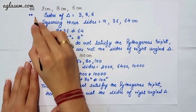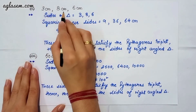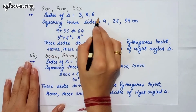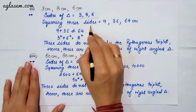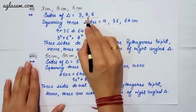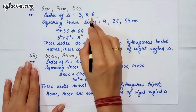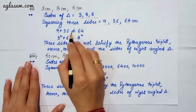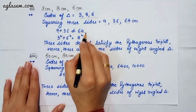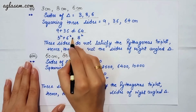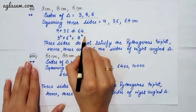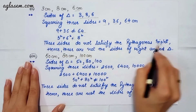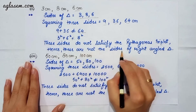Moving to our second part which says 3 cm, 8 cm and 6 cm. Again squaring the sides: 3² = 9, 8² = 64, 6² = 36. Now 9 plus 36 is not equal to 64, meaning 3² + 6² ≠ 8². Therefore, these sides do not satisfy the Pythagorean theorem. Hence, these are not the sides of a right angle triangle.